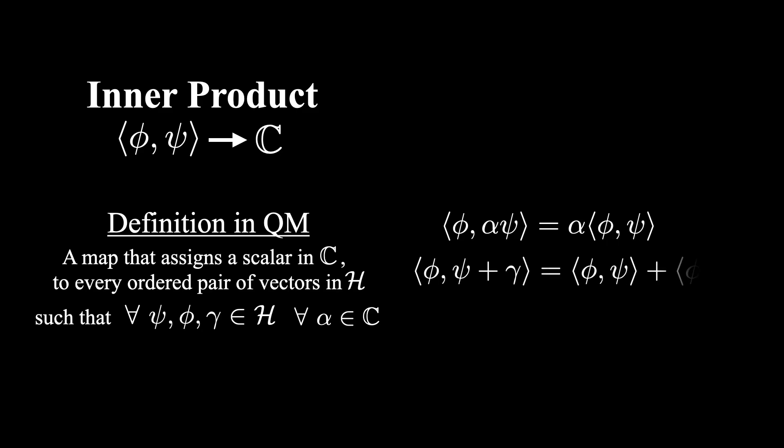Next, the second slot must be linear. So if you have the sum of two vectors psi plus gamma in the second slot, then you can split this apart and instead take the inner product between phi and psi and then add the inner product of phi and gamma.